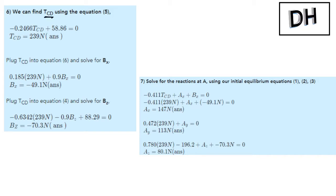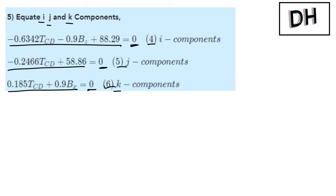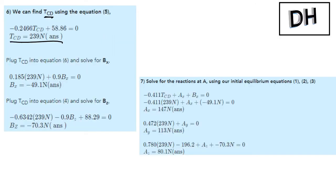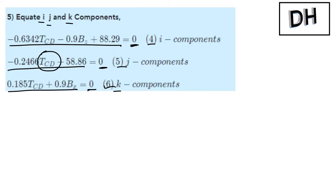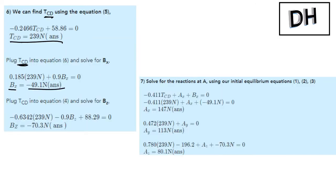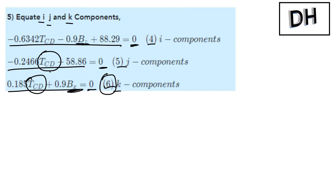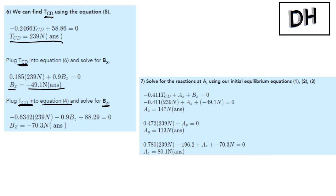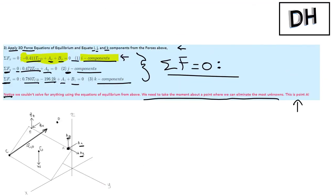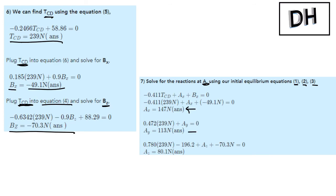Now we can begin solving. From the moment equations, I can solve for the tension TCD since it's the only unknown in that equation — one equation, one unknown. After finding TCD, I plug it into equation six to solve for Bx. Then I take TCD again and plug it into equation four to solve for Bz. Now that we know TCD, Bx, and Bz, we go back to equations one, two, and three — the force equilibrium equations — and solve for Ax, Ay, and Az.